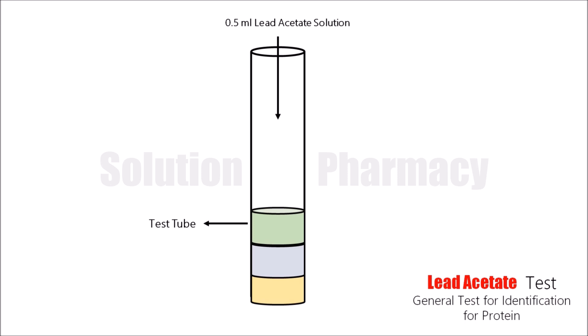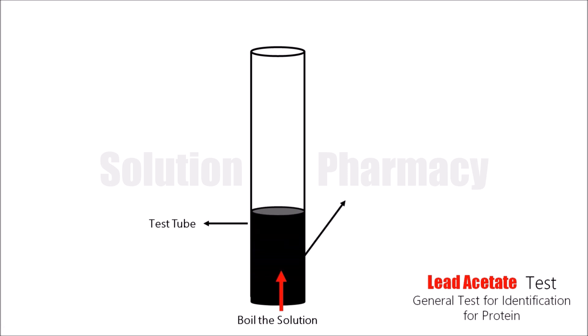After adding lead acetate solution into the test tube, then boil the content of the test tube on the boiling water bath. You can see here the color of the content of the test tube turns to brownish to black color, means black to brown color precipitate forms in the test tube.